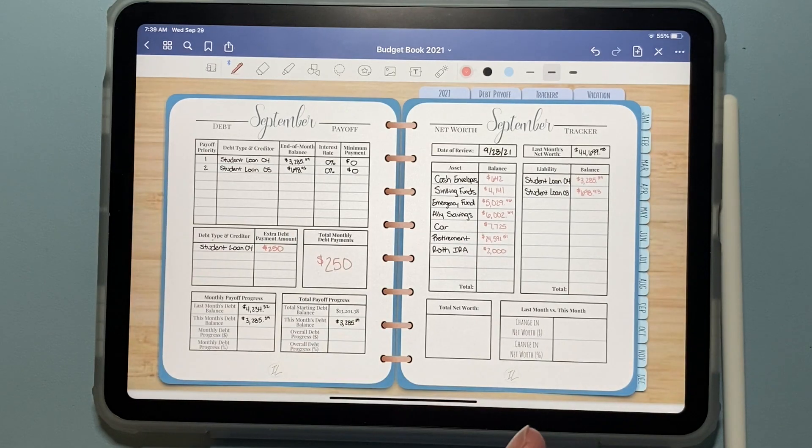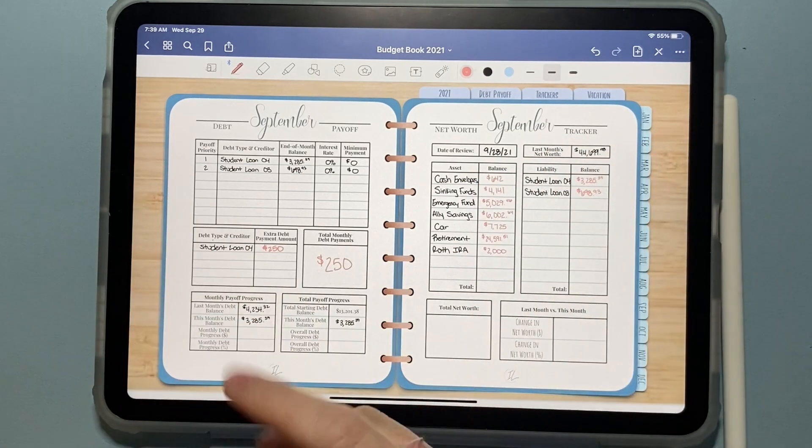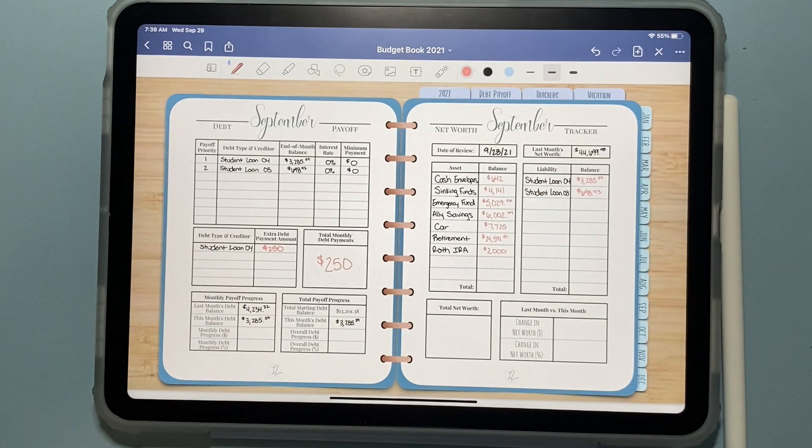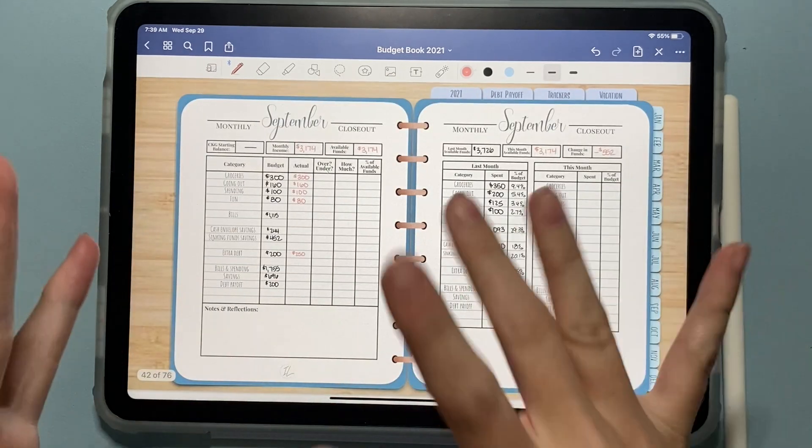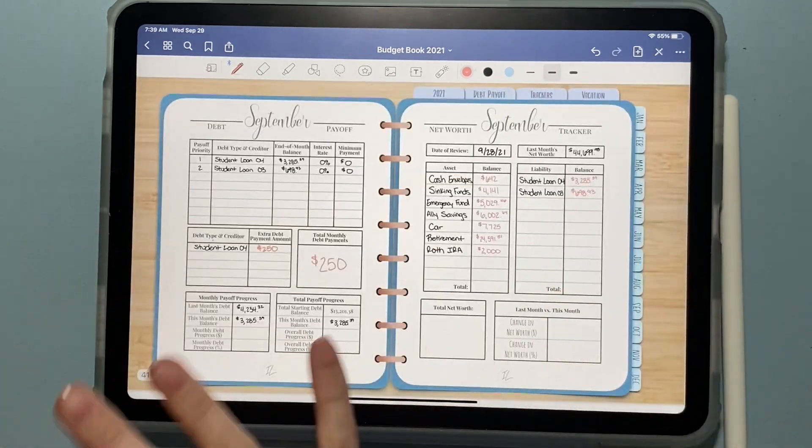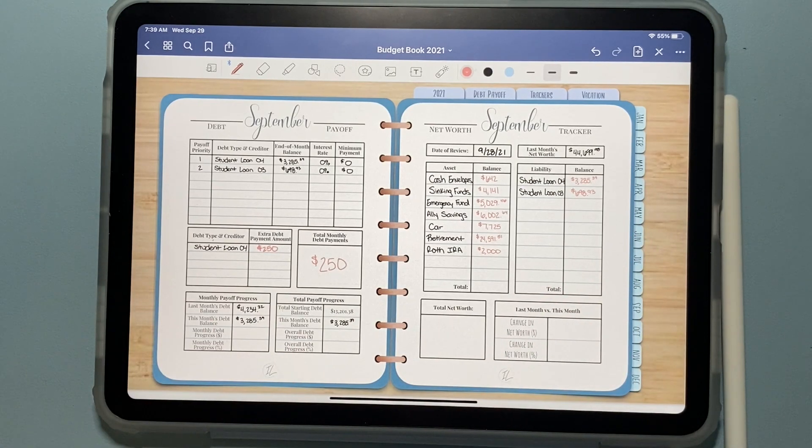Hi friends, welcome back to my channel. Today is my last video of my September closeout. Five videos, five days to close out September. And today we are going to be figuring out what my debt payoff progress was for the month, what my net worth is for the month, and just kind of what my spending looked like and give us an overall picture of how September went and give us things to think about moving into the month of October.